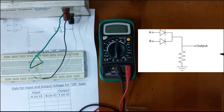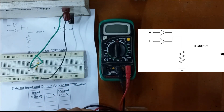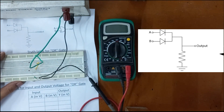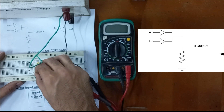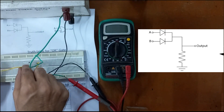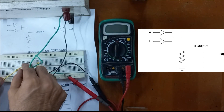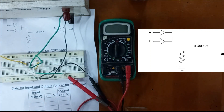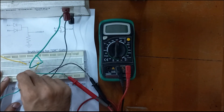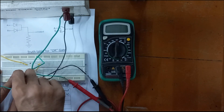Most of the connections are done. We just need to connect the multimeter for the measurement of output voltage. The black side will go to ground and the red side will go to the other end of the resistance. To provide the input, let's connect wires to the diodes — the yellow wire is connected to the upper diode acting as terminal A, and the green wire will act as terminal B.